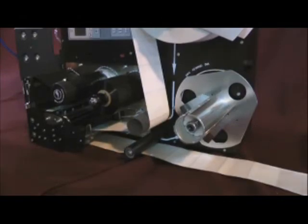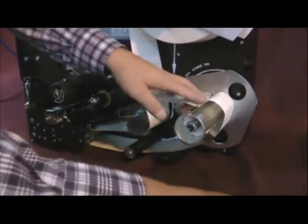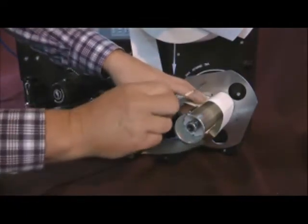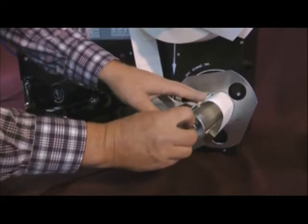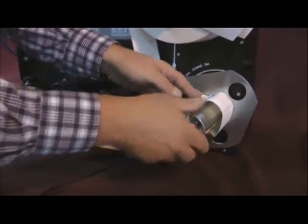Thread the labels under the rear roller, wrap the labels in a counterclockwise direction around the rewind hub, and secure into place using the silver metal clip provided with the machine.